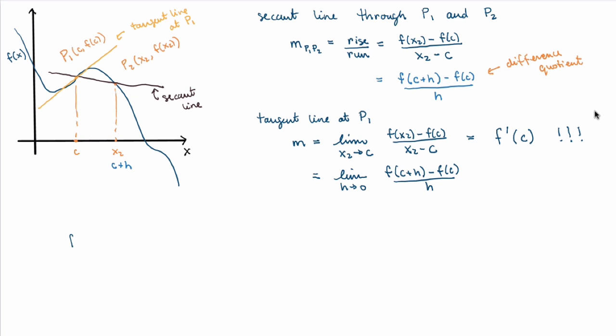Namely, that f prime of c, the derivative of a function at the point c, is the slope of the tangent line at the point x equals to c. BOOM!